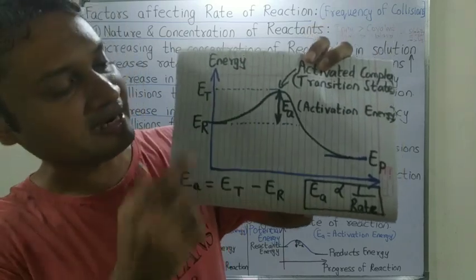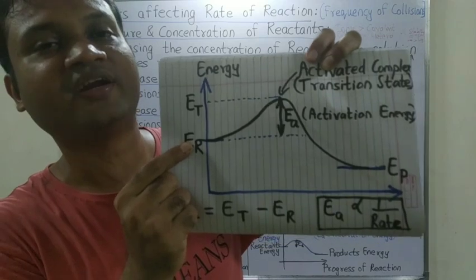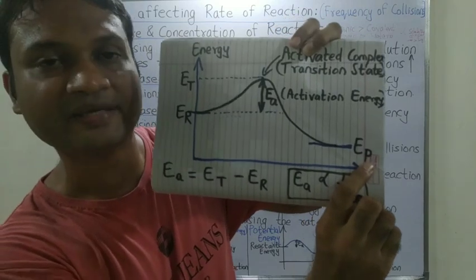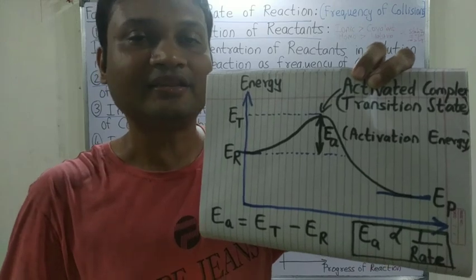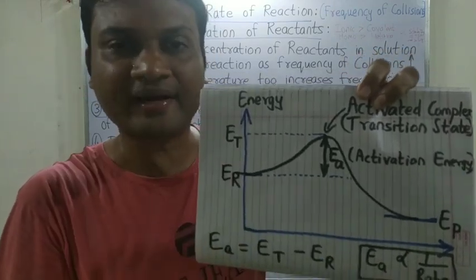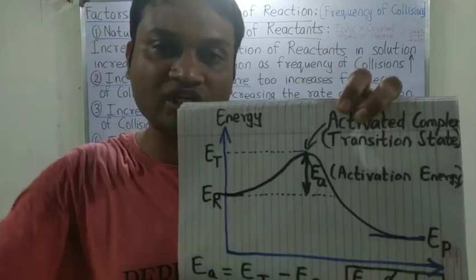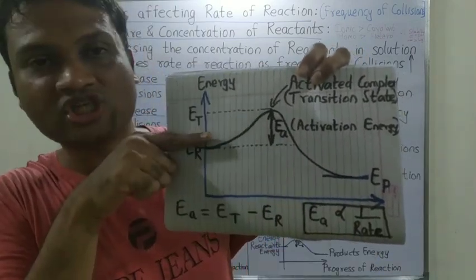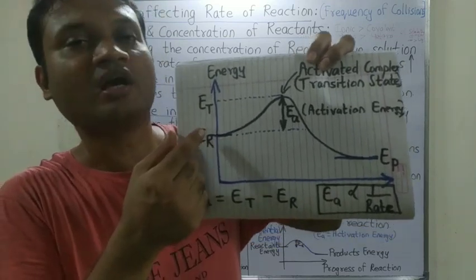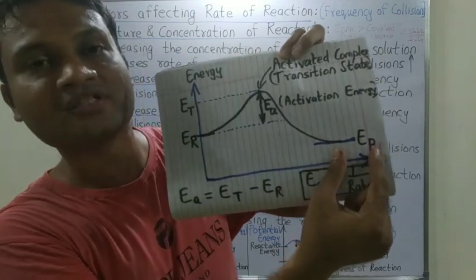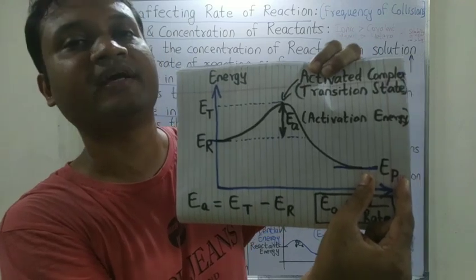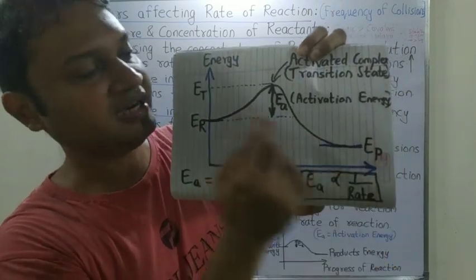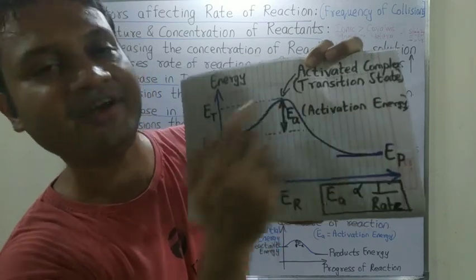As the reaction proceeds from reactants to products, we move to the right on the graph. The energy of the reactants is ER, and the energy of the products is EP. The energy of products is generally lower. Reactants react to form products in order to lower their energy, because lower energy means greater stability. The products have less energy and more stability, while reactants have higher energy and less stability. However, reactants do not directly convert to products — they must overcome an energy barrier. An activated complex is formed at an intermediate stage, called the transition state.